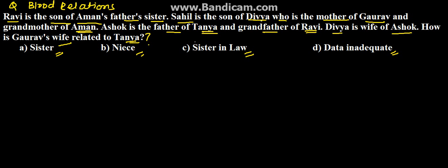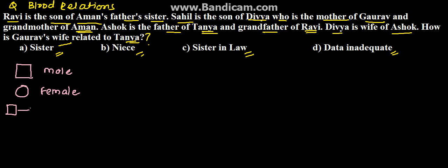Before going to the problem, we need to understand the basic symbols we are going to use. A square is used for male. These are the standard symbols used so that you don't get confused. A circle is for female. For husband and wife, it will be a two-way arrow between male and female.